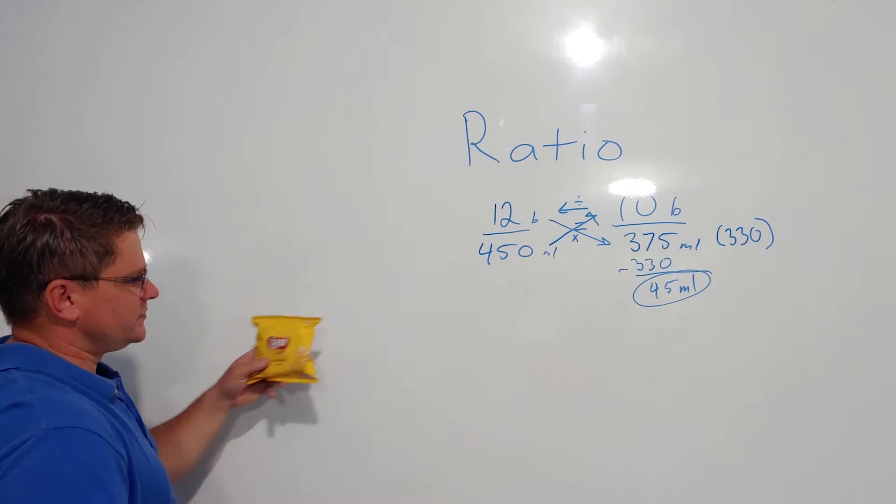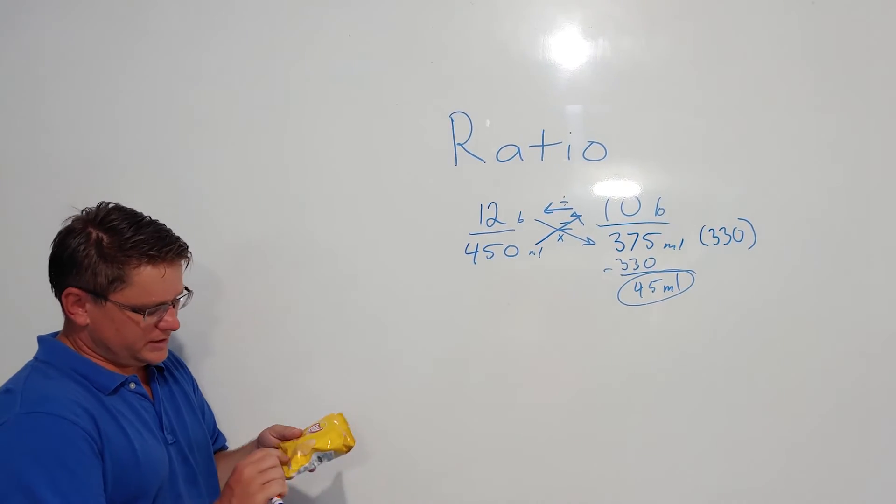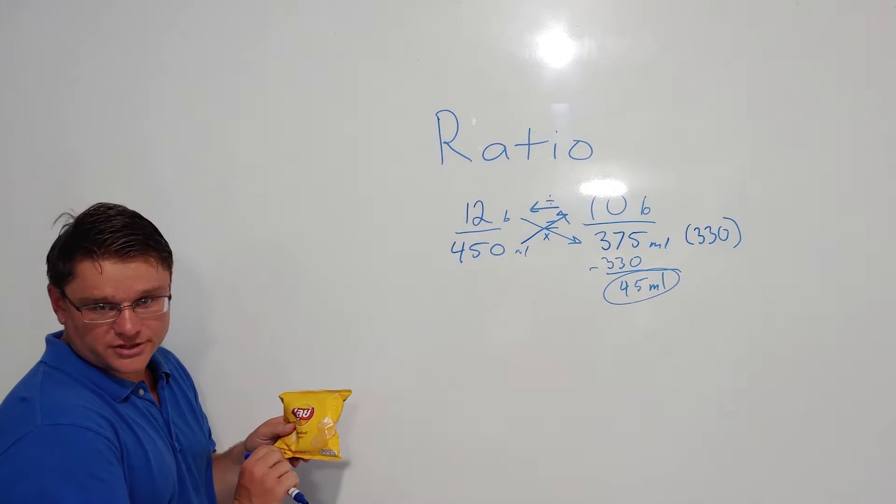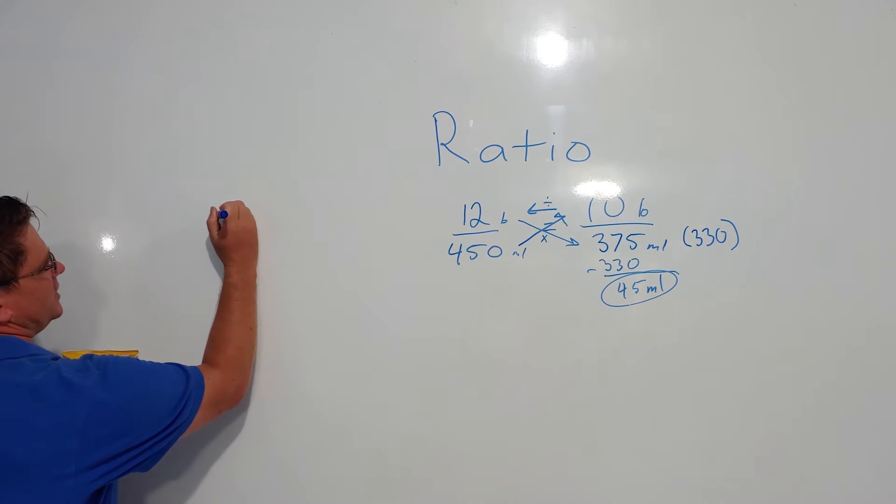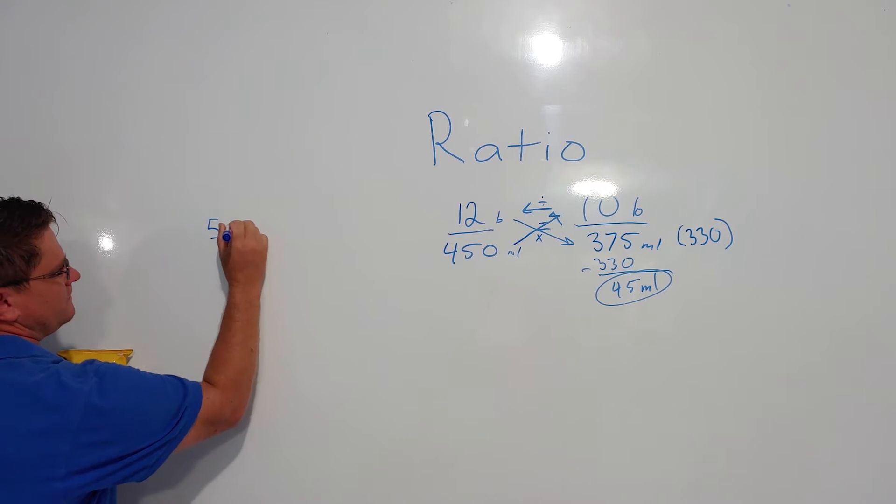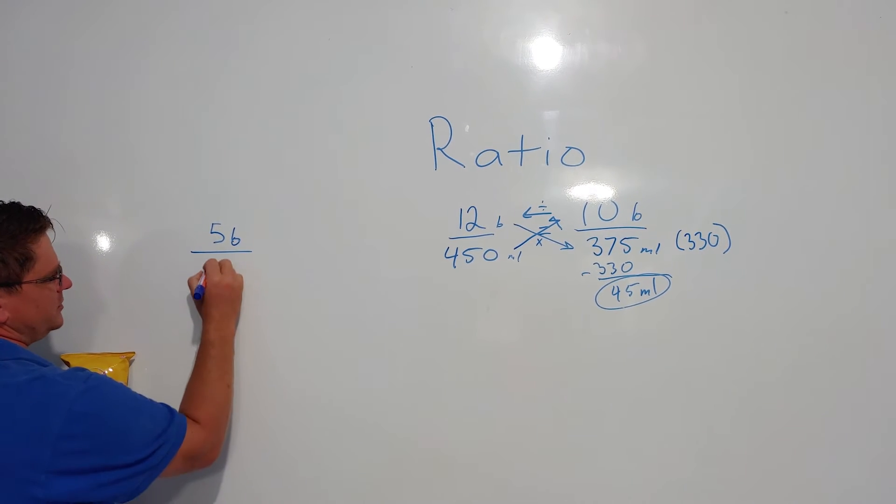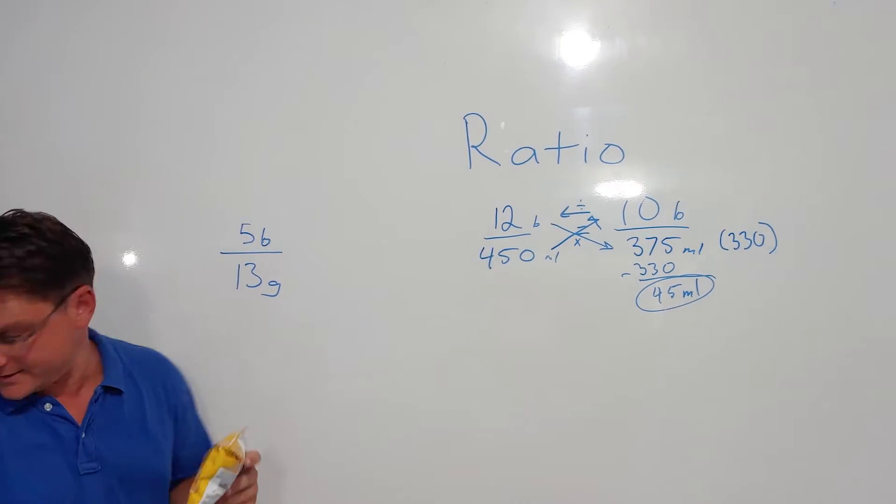And that's what ratios can tell you. So the first thing you do is you say alright, this is 13 grams. So you've got 5 baht to 13 grams of Lay's.